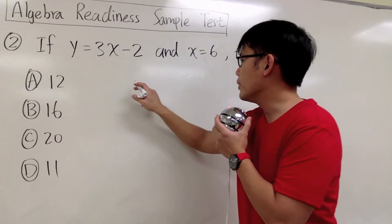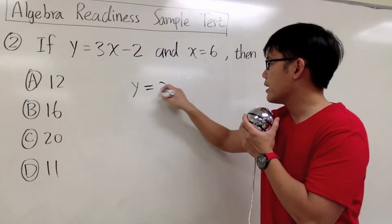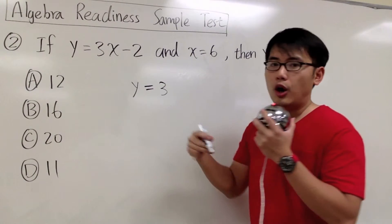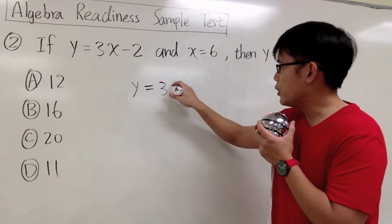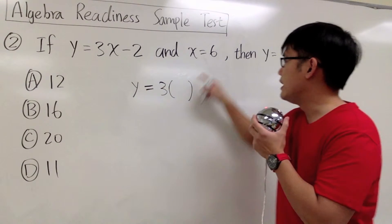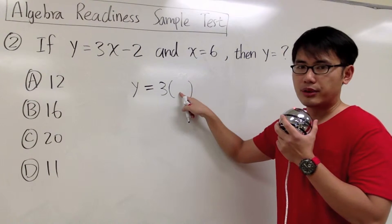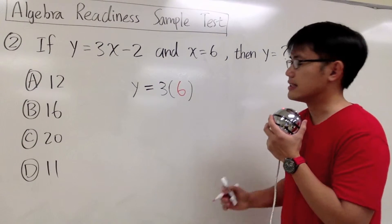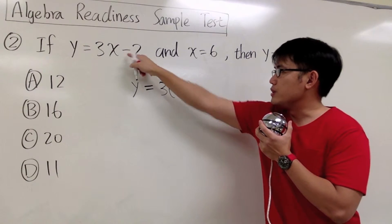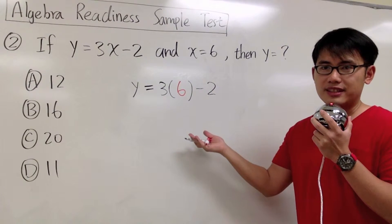So let me put this down. We know y is going to be equal to 3. Whenever we plug in numbers into variables, always open the parentheses. So let me open the parentheses because I see the x, and we know that x is equal to 6. I will put 6 into this parentheses — that's a substitution. And then we still have to subtract 2 from there. This will be the setup.